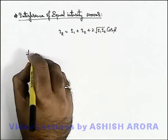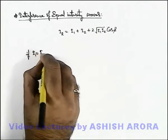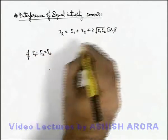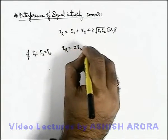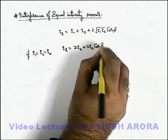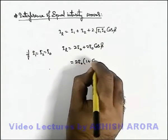Here if we are given that both the waves are of same intensities, I₁ is equal to I₂ is equal to I₀. In that situation, the resulting intensity will be 2I₀ plus 2I₀cosφ. On simplifying we are getting 2I₀(1 + cosφ).